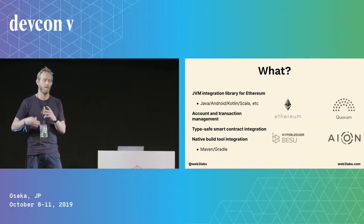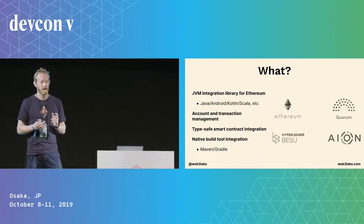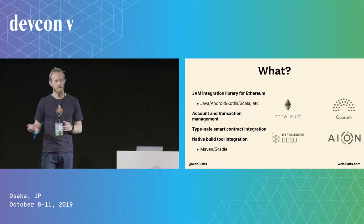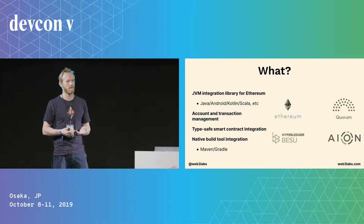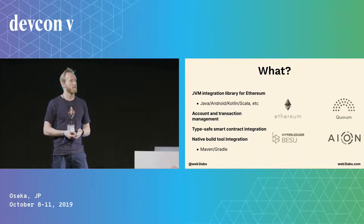Although the JVM is not a proof-based language, this type safety gives you certain guarantees about your code when it's running. We also have native build tool integration. Web3J supports core Ethereum and, by extension, Geth and Parity, but also Hyperledger Besu, JPMorgan's Quorum, and we recently announced an Aion integration as well.